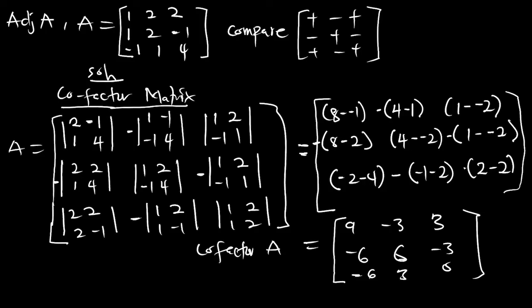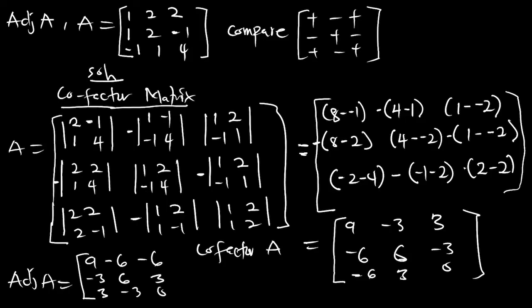This is the cofactor matrix. Now to get the adjoint we must transpose this matrix. Transposing — replacing rows with columns — gives us the adjoint of matrix A as: 9, negative 6, negative 6; negative 3, 6, 3; 3, negative 3, 0. This is the adjoint of matrix A. Thank you for watching this episode — please subscribe, like, and comment on the video.